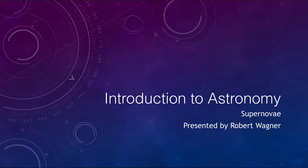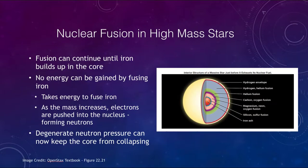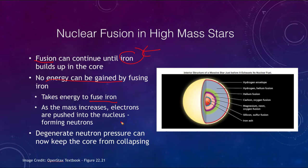What is happening with these higher mass stars? As you may recall, when we look at nuclear fusion, the fusion can continue until iron is built up in the core. Once we get to iron, we cannot gain any energy — no more energy can be gained. It actually takes energy to fuse iron together, and as the mass increases, the electrons are pushed into the nucleus of the atom, forming neutrons.